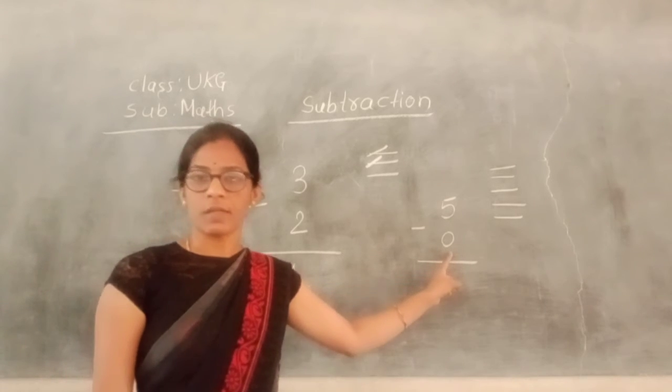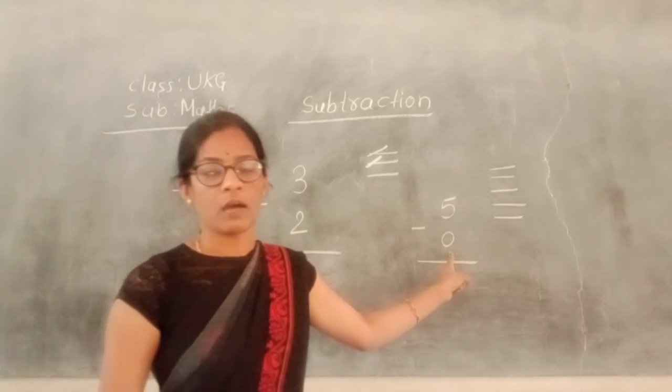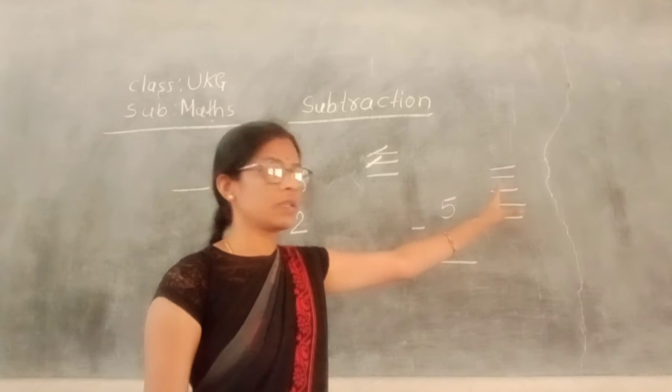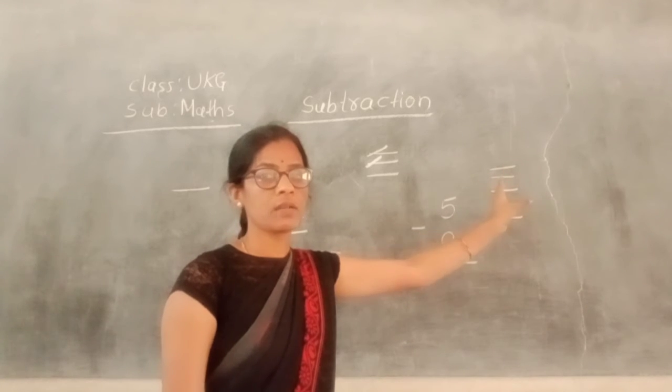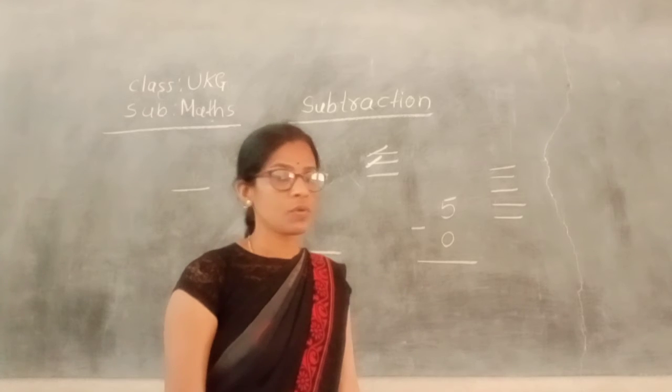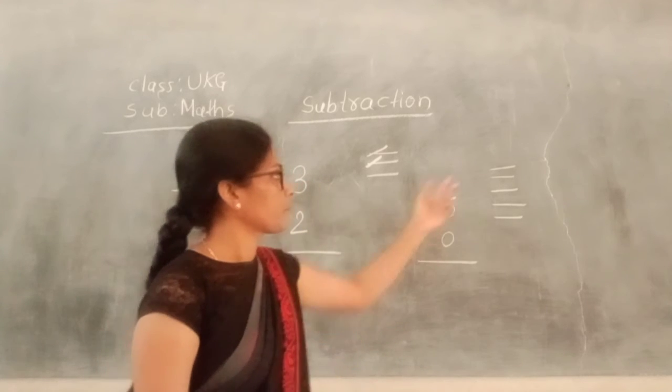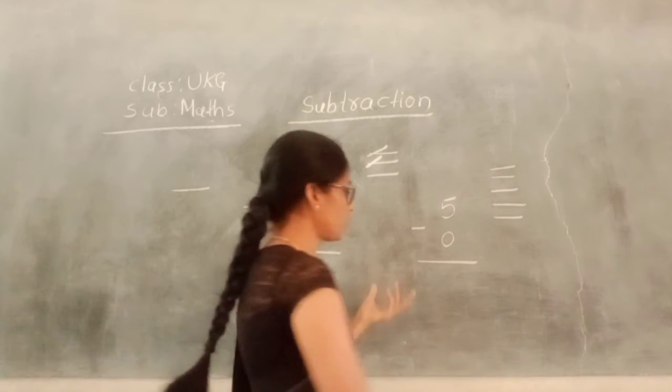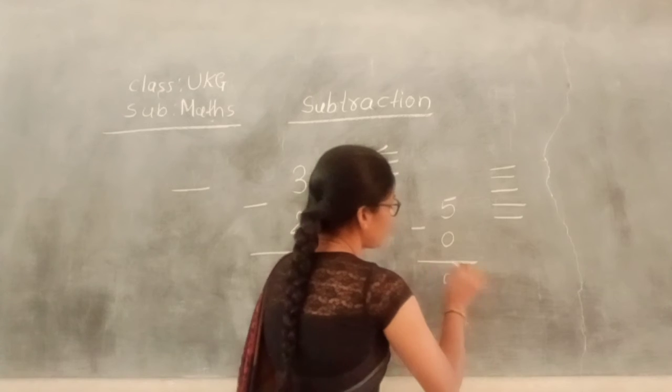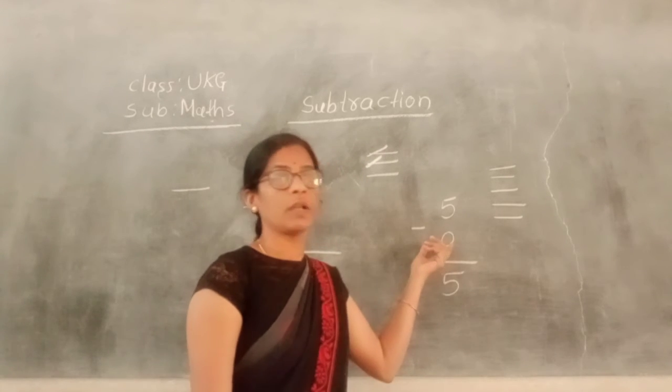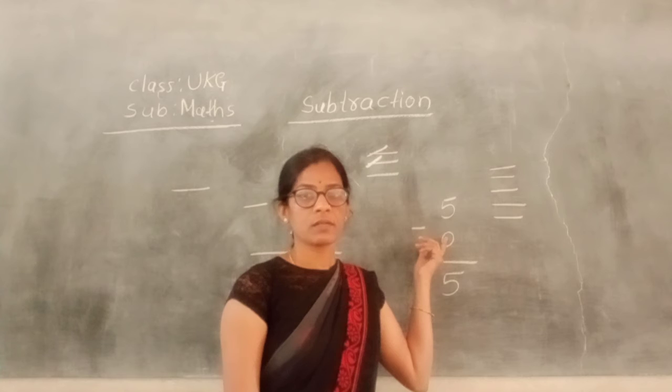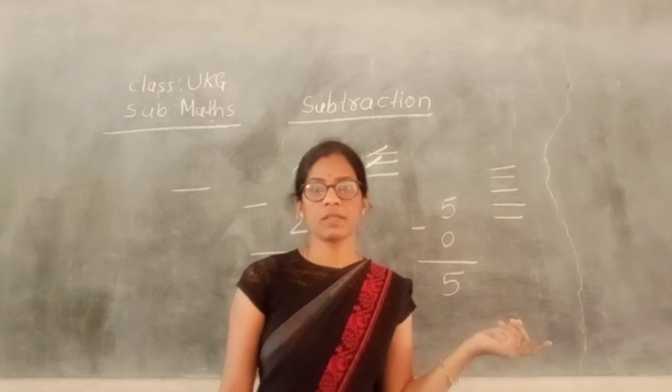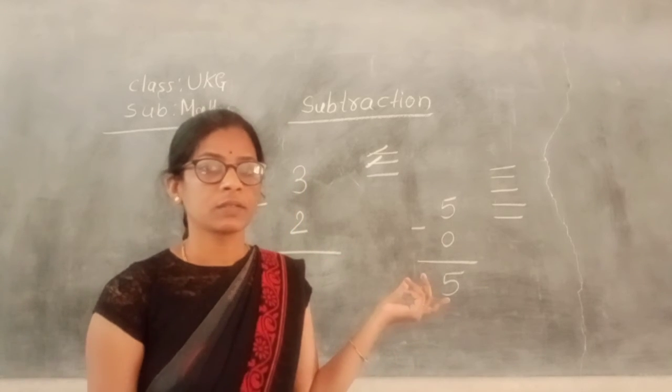Zero means nothing. Zero means nothing. Not any number. So you don't cross here one line. You cross not any. So you write the same number. One, two, three, four, five. The same number is coming, so you write here five. When we minus with zero, the answer is coming the same number. Clear it.